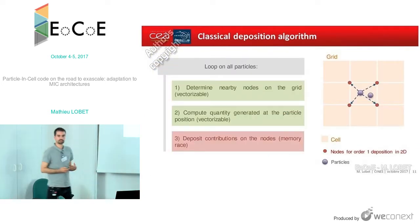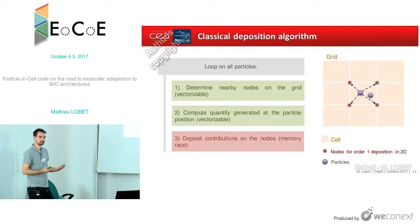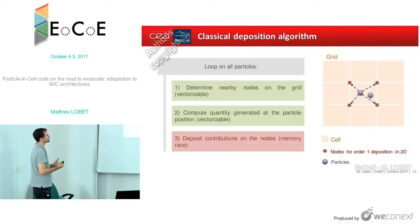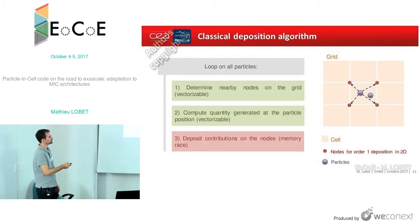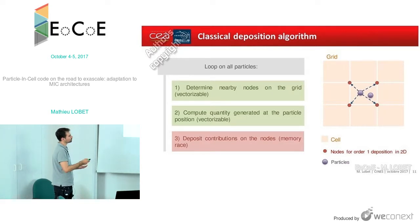After this first optimization focusing on cache memory, I would like to talk about vectorization. We did a lot of different vectorization improvements, but I think the most impressive one is about the deposition algorithm. Here is the 2D representation of this algorithm. When a particle is located in a cell, it will deposit its contribution to the nearby nodes. The number of nodes involved depends on the order — here it's order 1, a bilinear interpolation. But at order 3, for instance, we will have to use all the nodes of a larger portion of the grid.